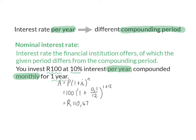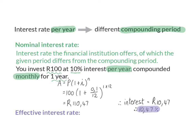This means that you received an interest of R10.47, which is the same as an interest rate of 10.47% per year instead of the original 10% per year, and the reason for this is because it was compounded monthly. This 10.47% is called the effective interest rate, and the effective interest rate is the actual rate that the account receives per year.